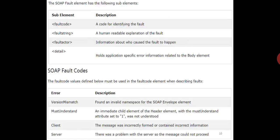The SOAP fault element has the following sub-elements: fault code, fault string, fault actor, and detail. And the fault code values defined below must be used in the fault code element when describing the faults.